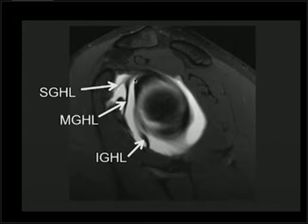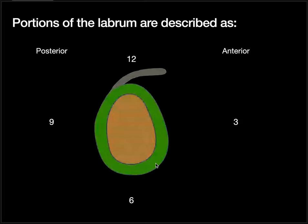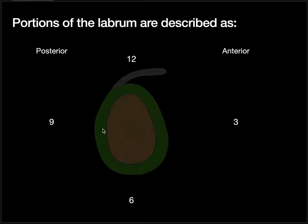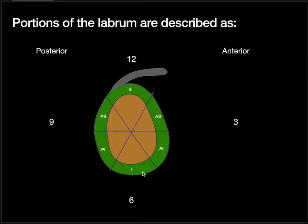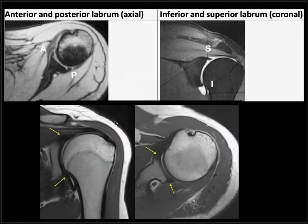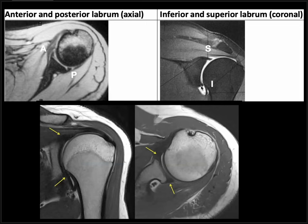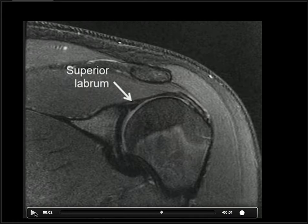In this MRI image, we will see the coracohumeral ligament, superior glenohumeral ligament, middle glenohumeral ligament, and inferior glenohumeral ligament. The glenohumeral ligament classification has been described as superior, anterior-superior, anterior-inferior, inferior, and posterior-posterior. On axial sections, the glenoid and labrums will appear as triangular hypointense areas. This triangular hypointense area is the superior labrum, and this triangular hypointense area is the inferior labrum. Here we can also see the long head of biceps going and attaching to the superior labrum.